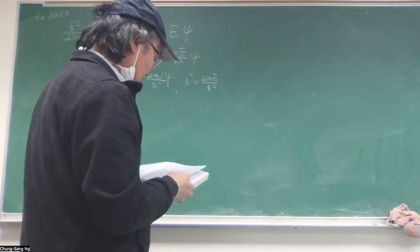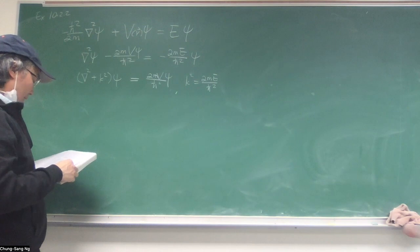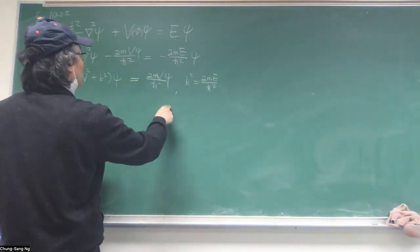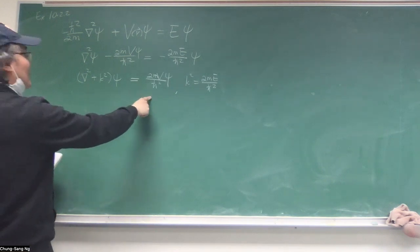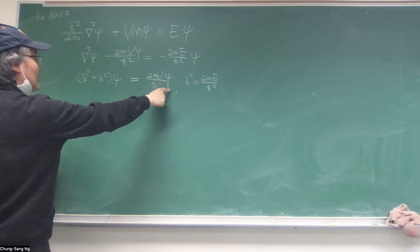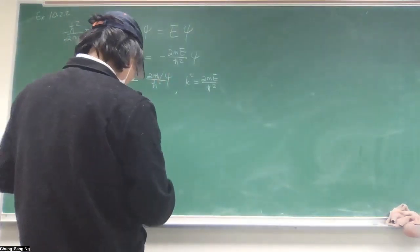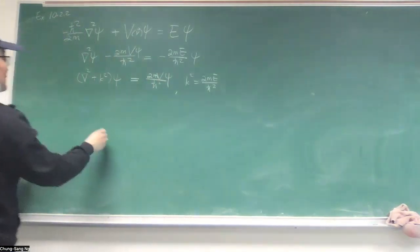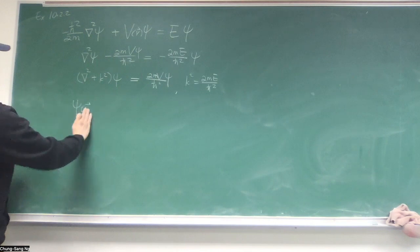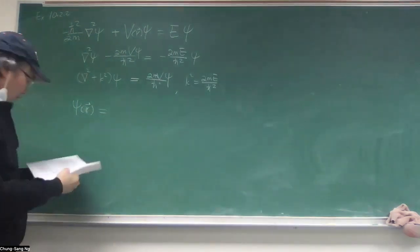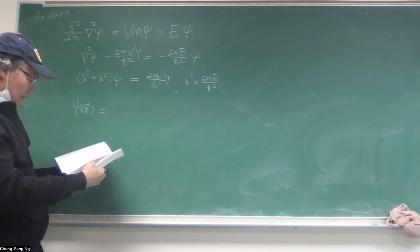And we obviously talked about constructing the Green function using homogeneous solution. And that exactly what was done. It's in the form that you can solve by the Green function except that because the right-hand side also depends on psi, then you have a problem.